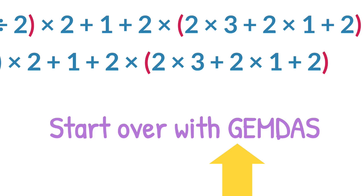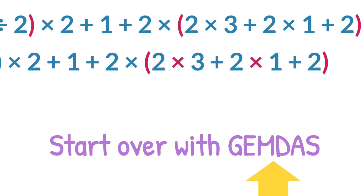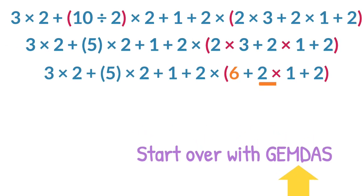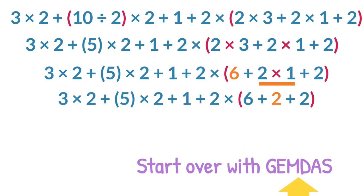No grouping symbols are inside this set of parentheses, so we move to E, representing exponents. But there are none of those either. Now, we move to multiplication and division from left to right. Therefore, we take care of the multiplication of 2 by 3. Next, still working inside the parentheses, we multiply the 2 and 1.